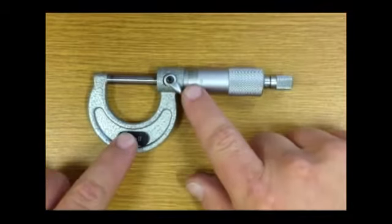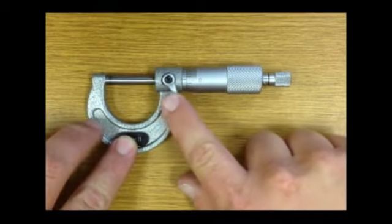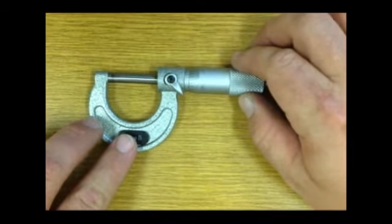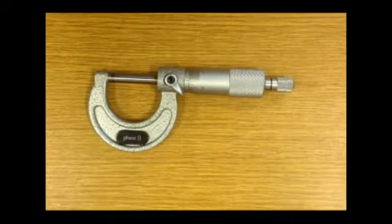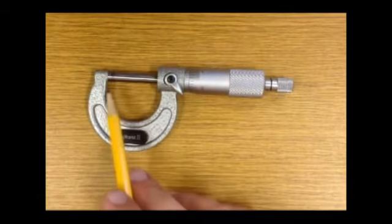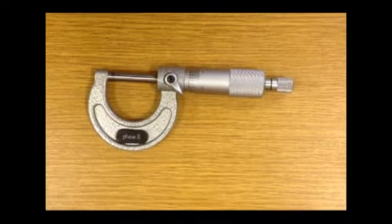This is your locking mechanism to lock it into place. This is a one inch micrometer so you can measure one inch inside your anvil and your pole.